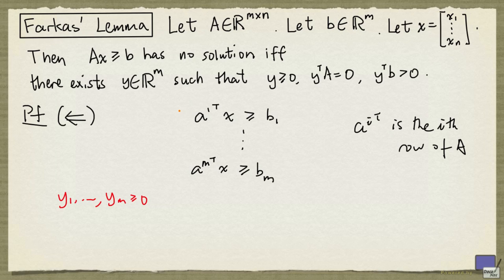Now if y1 up to ym are non-negative, then we can multiply the i-th inequality by yi and get the following. These are non-negative numbers, so the direction of inequality stays the same.